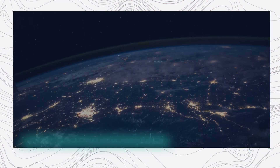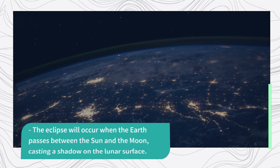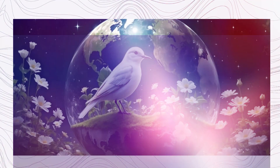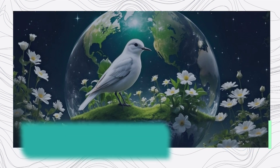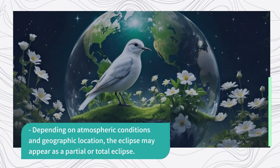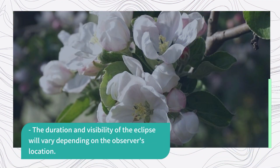The eclipse will occur when the Earth passes between the Sun and the Moon, casting a shadow on the lunar surface. Depending on atmospheric conditions and geographic location, the eclipse may appear as a partial or total eclipse. The duration and visibility of the eclipse will vary depending on the observer's location.